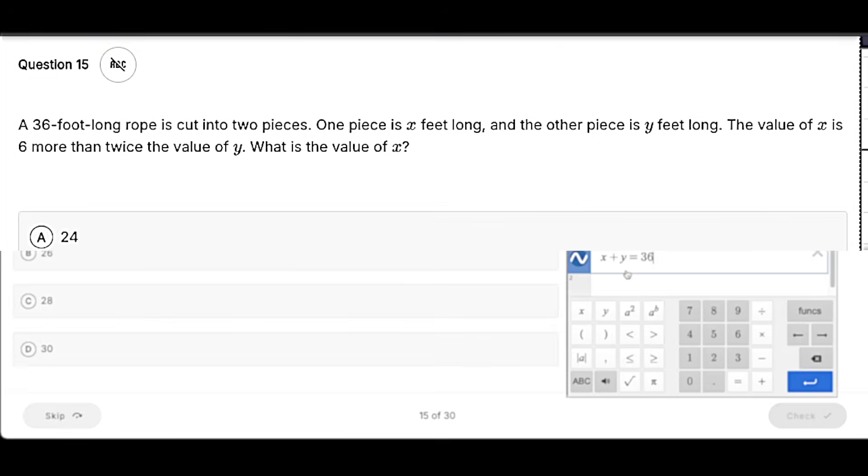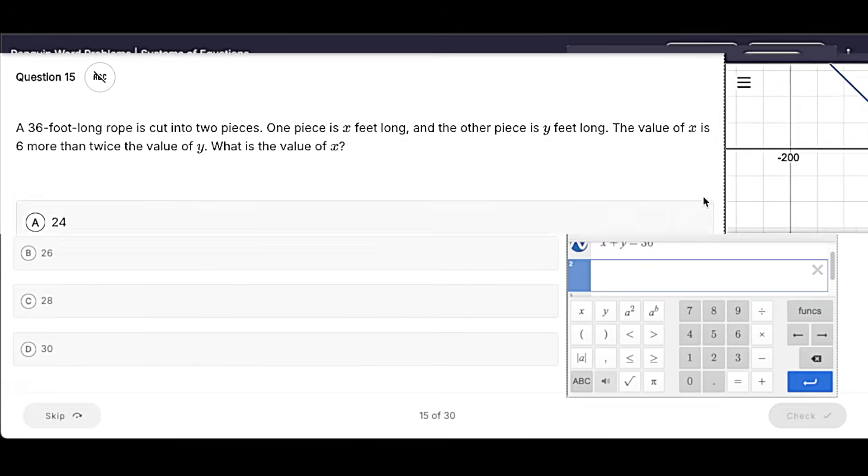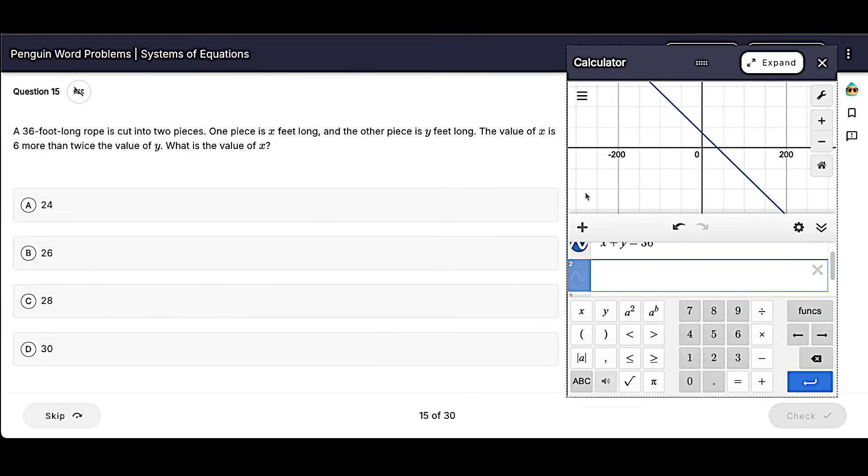And then we have a comparison. The value of X is six more. And here, I like to just turn words into math. The value of X would be X. The word 'is' means equals.